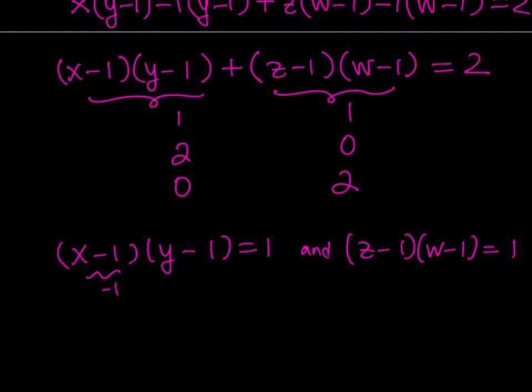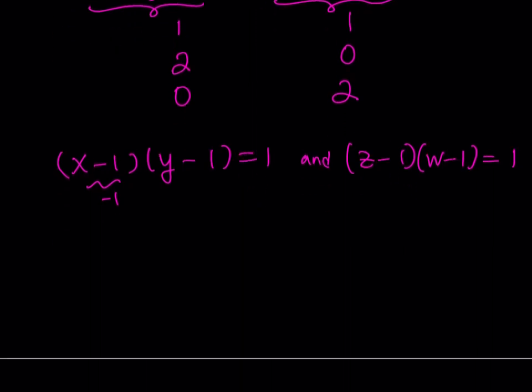Now, how can you get 1 from a product like this? Well, either you're going to have to multiply 1 times 1 or negative 1 times negative 1. But in order for this to be negative 1, you would have to use x equals 0, but you can't use 0 because we're looking for positive integer solutions. Therefore, you're only going to go with the positive ones. For example, this should give you x minus 1 is equal to 1, y minus 1 is equal to 1, z minus 1 is equal to 1, and w minus 1 is equal to 1. Okay.